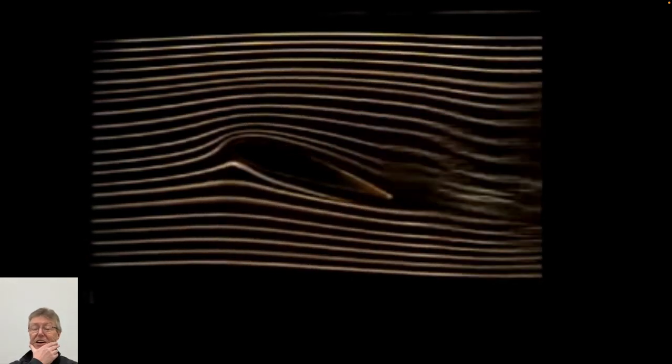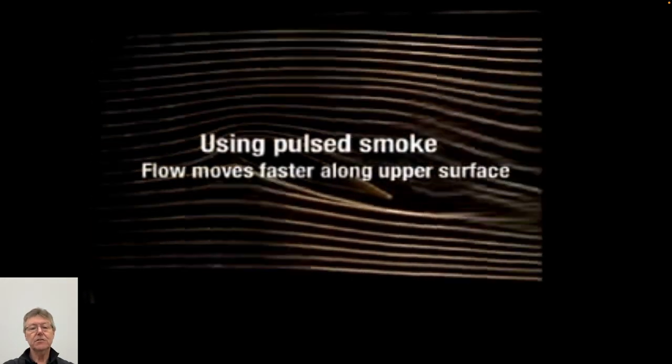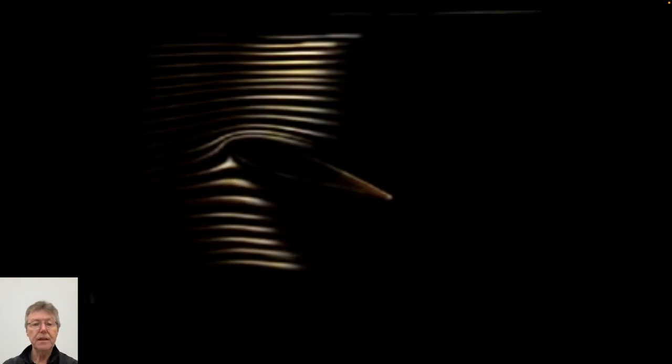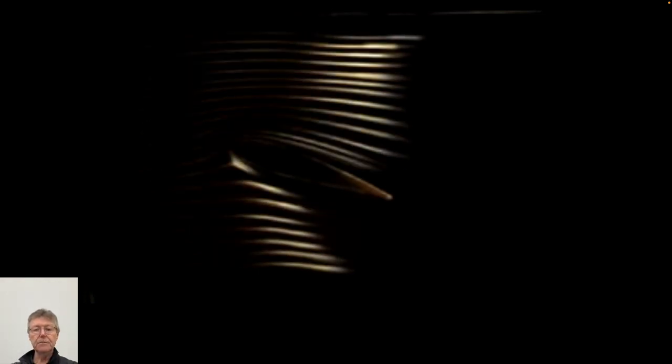In week nine we talked about dimensional analysis - you can use models to represent behavior and then scale them, scaling the forces on those models to represent forces on real things. One of the things you have to get right is that kinematic similitude means you run the model at the same Reynolds number. At the same Reynolds number, the flow regime around the model and the prototype - if you took a snapshot of the smoke streak lines - would look exactly the same in model and prototype.